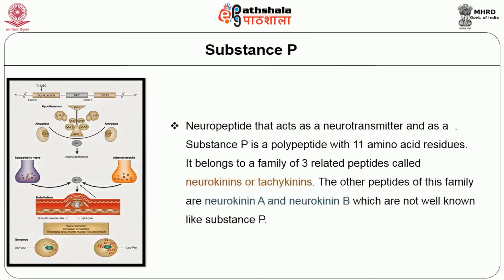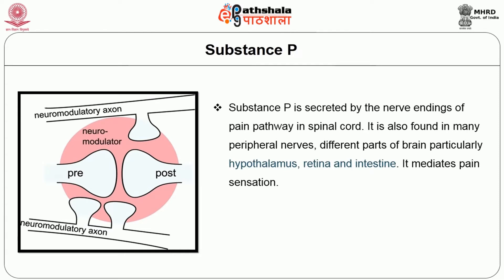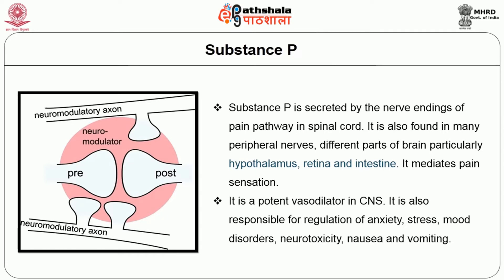Substance P is a neuropeptide that acts as both a neurotransmitter and a neuromodulator. It is a polypeptide with 11 amino acid residues and belongs to the family of three related peptides called neurokinins or tachykinins, along with neurokinin A and neurokinin B. Substance P is secreted by nerve endings of the pain pathway in the spinal cord and is also found in many peripheral nerves, different parts of the brain particularly the hypothalamus, retina, and intestine. It mediates pain sensation, is a potent vasodilator in the CNS, and is responsible for regulating anxiety, stress, mood disorders, neurotoxicity, nausea, and vomiting.